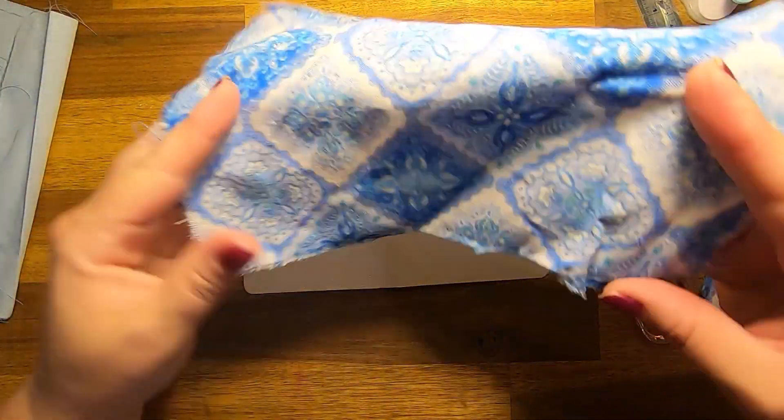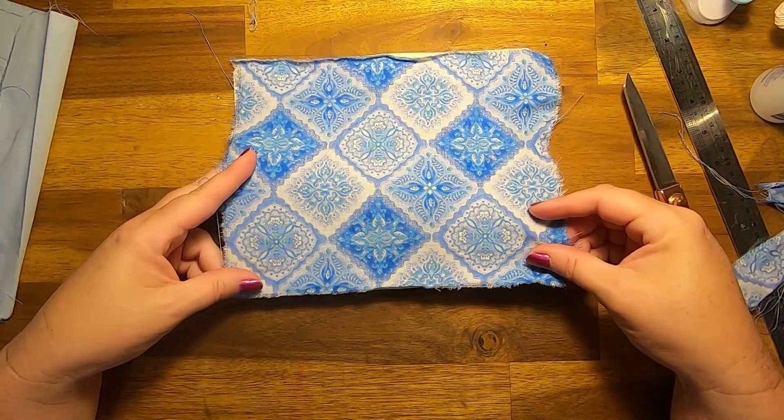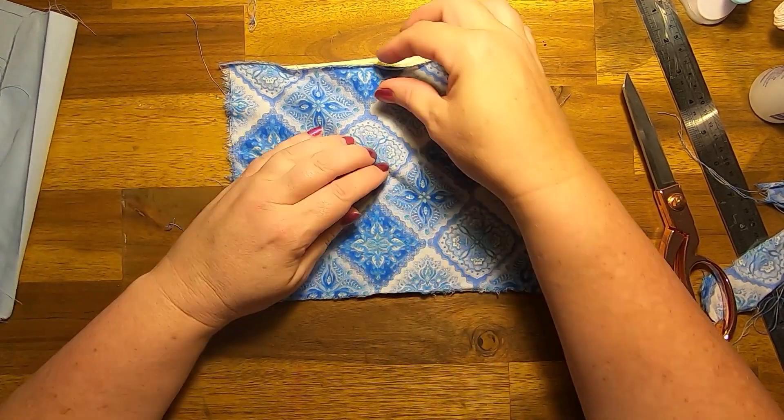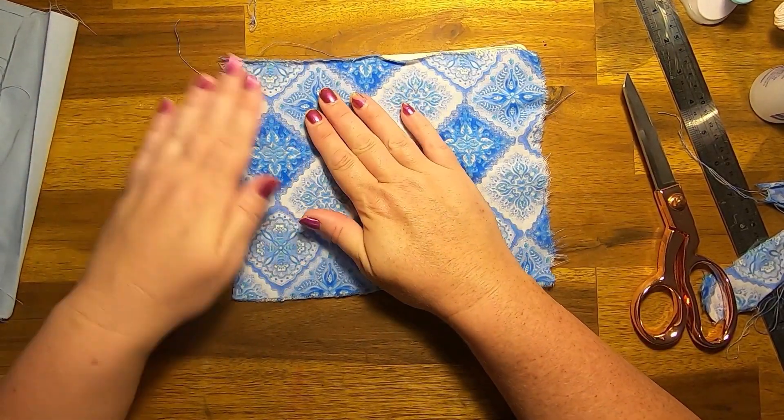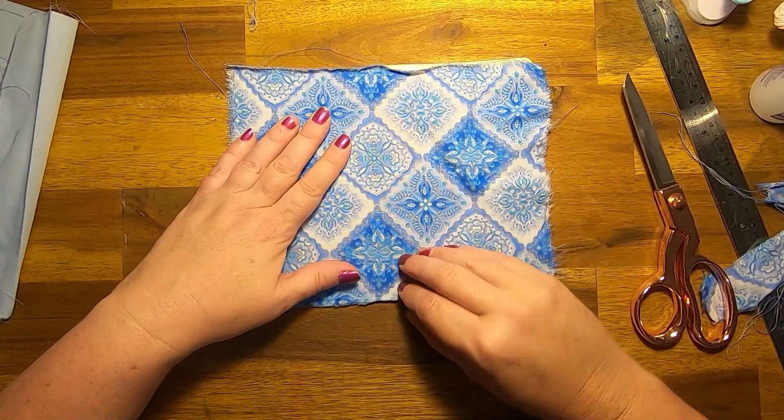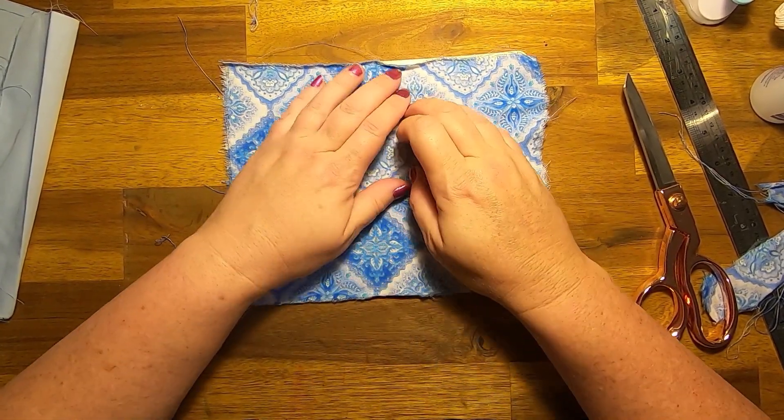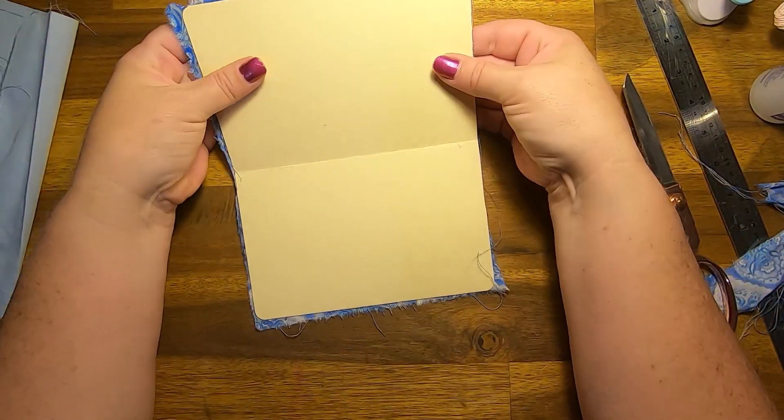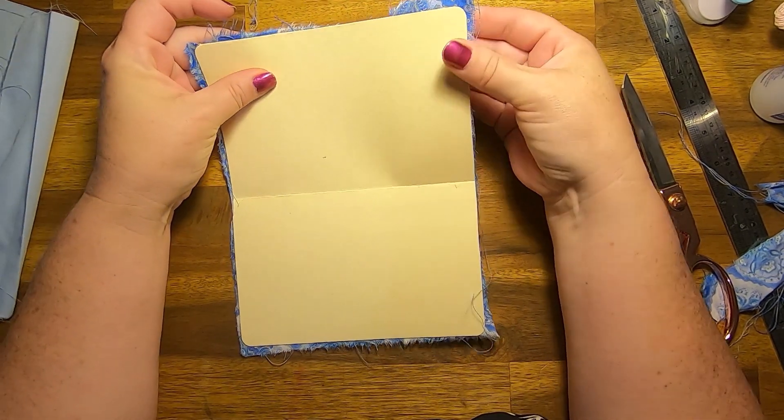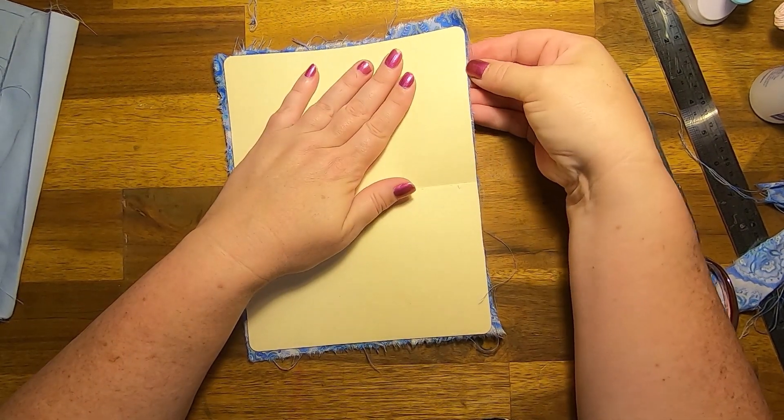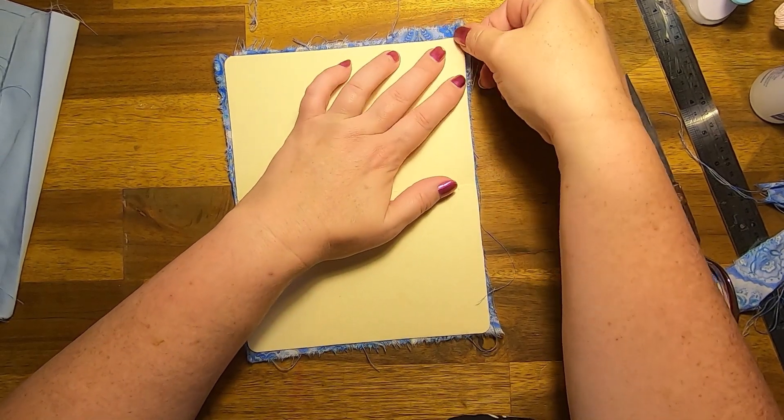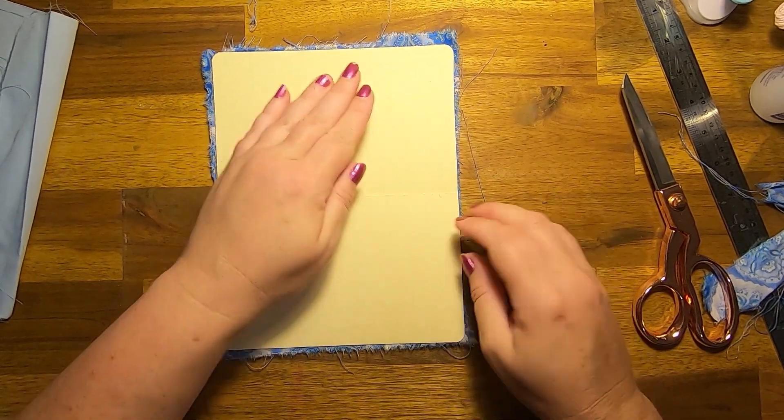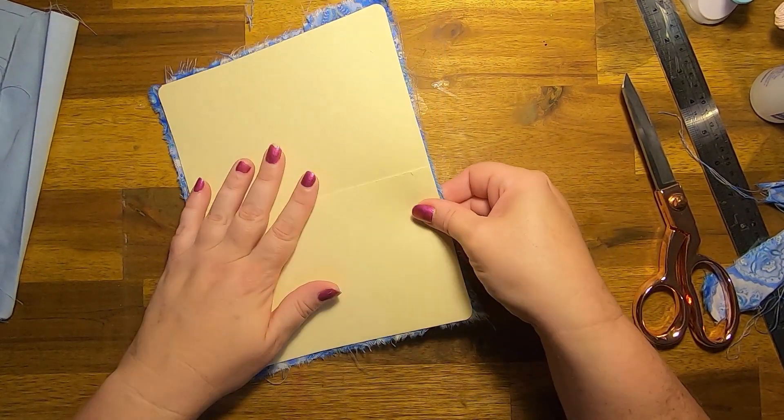All right, and then we want to stick our fabric whatever side you choose. And I'm sticking the wrong side out because I want to. And we just want to put that on with the small amount hanging over the edge. And you should be able to pull it tight but you don't want to warp your card.